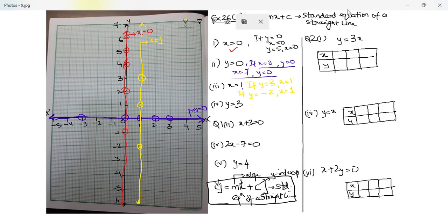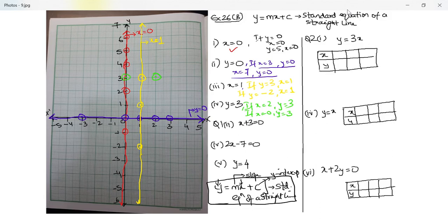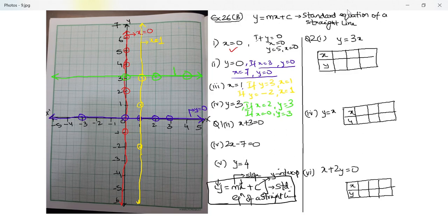You can use one graph to draw many lines so that we use paper wisely. The next one is y equal to three. If x is two, y is three. If x is zero, y is still three. If x is four, y is still three. Any point on this line always has y equal to three, so this line is y equal to three.